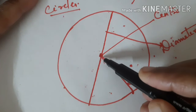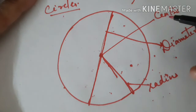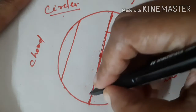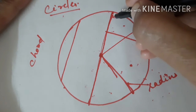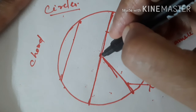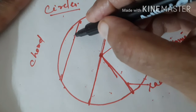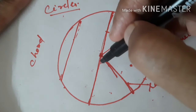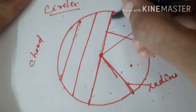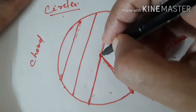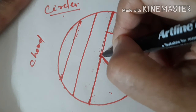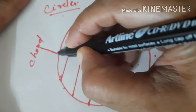Next is the chord. A chord is any line joining two points on the circle. What is the difference between a chord and a diameter? The diameter must pass through the center of the circle, but a chord does not need to pass through the center — any line joining two points on the circle is a chord. Even the diameter is a chord, so all diameters are chords, but not all chords are diameters. A chord becomes a diameter only when it passes through the center.